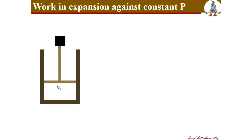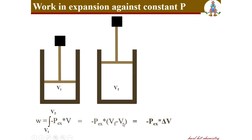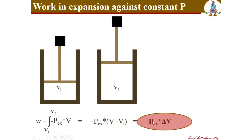The next case is expansion against constant pressure. Consider the system expanding from initial volume Vi to final volume Vf. Performing the integration of minus p_external dV, the result is W equals minus p_external times (Vf minus Vi), which can be written as minus p_external times delta V. Volume is a state function, so we write delta V. So work in this case is the product of the constant external pressure and the change in volume during the process.